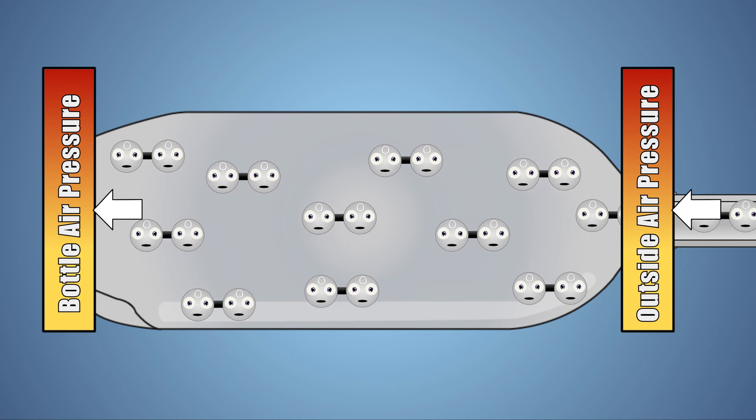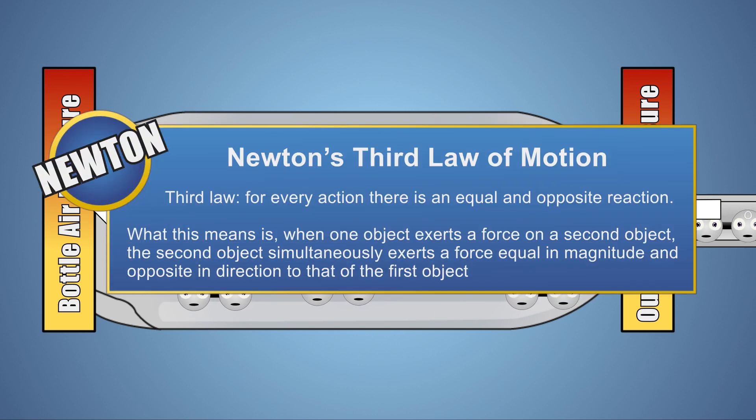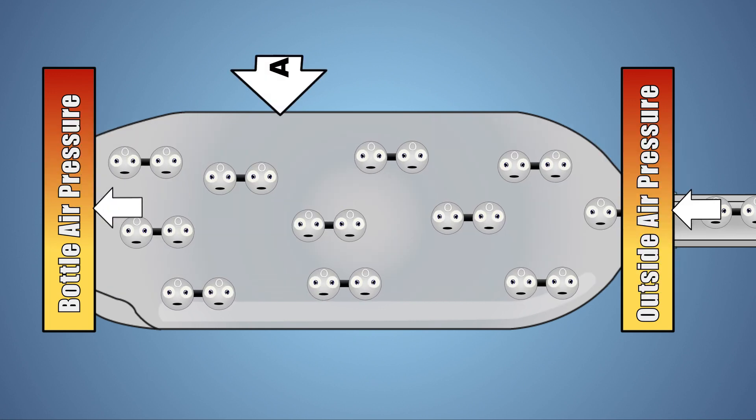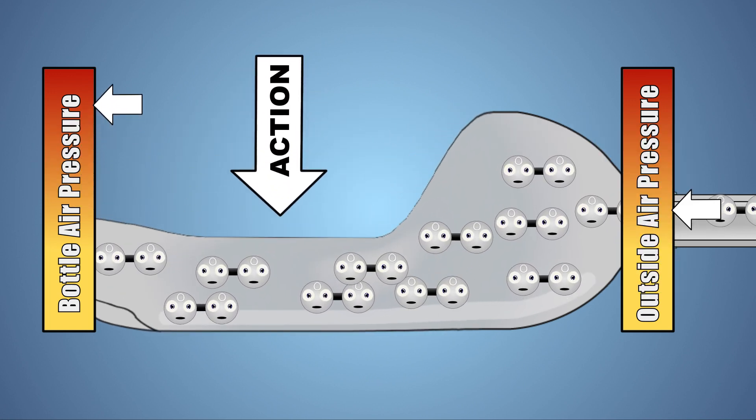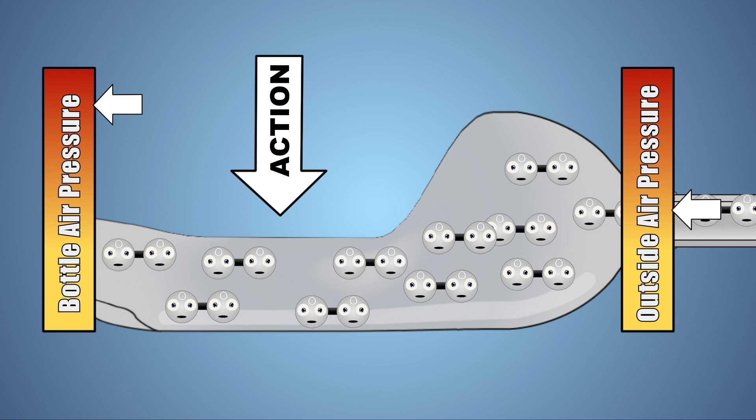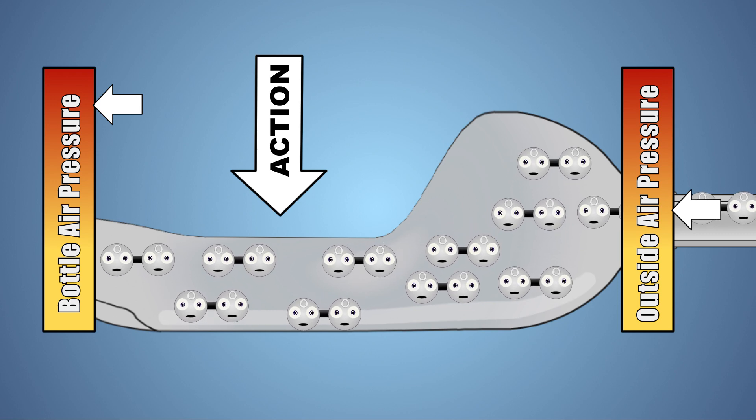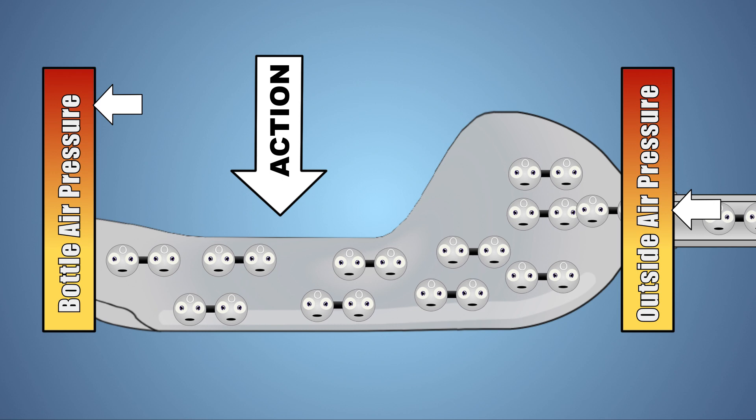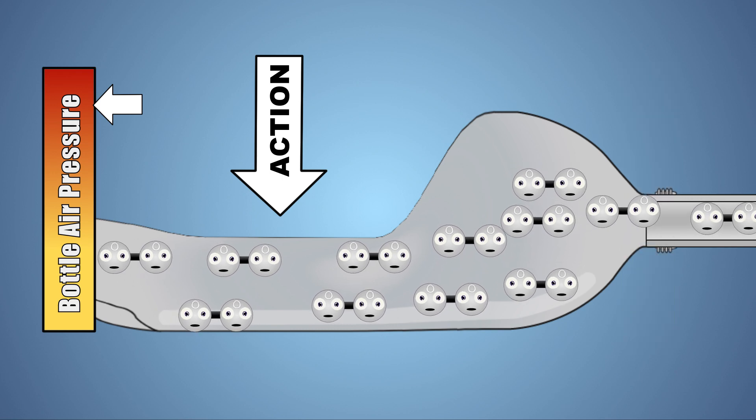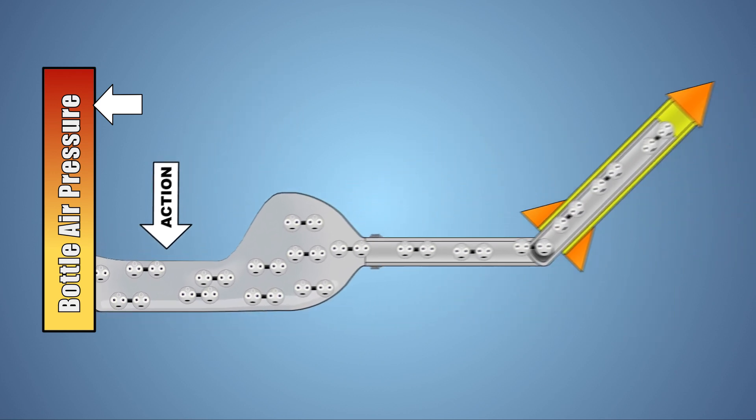What happens next is a great example of Newton's third law of motion. His third law states that for every action, there is an equal or opposite reaction. When we stomp on the bottle, we cause the action which reduces the volume of space the air molecules take up, increasing the pressure within the bottle above the pressure outside. The bottle's pressure wants to be equal to the pressure outside. This is where the reaction comes into play.